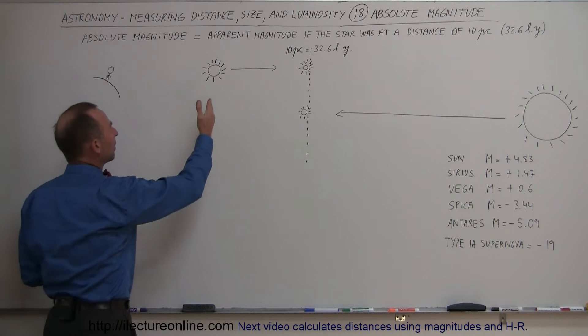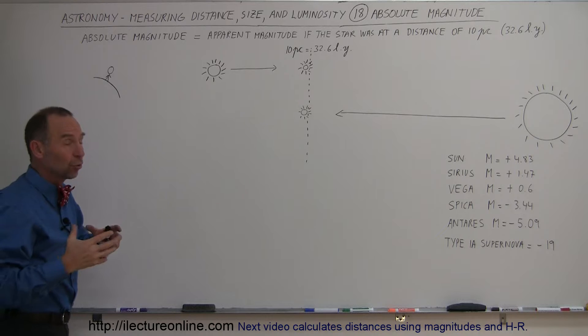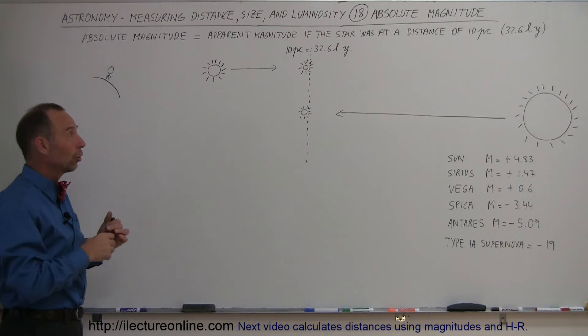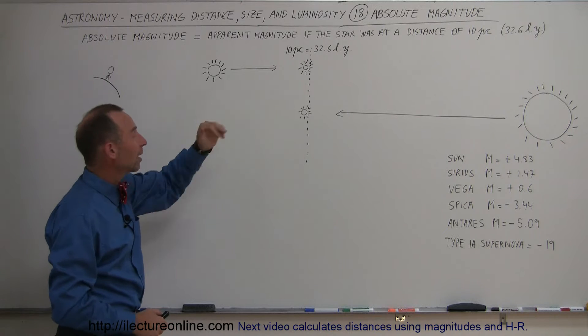Now, we don't know, of course, that it's bright because it's a really big star, or it's bright because it's close. Now, obviously, from this picture, you can see that it's closer to us than 10 parsecs.